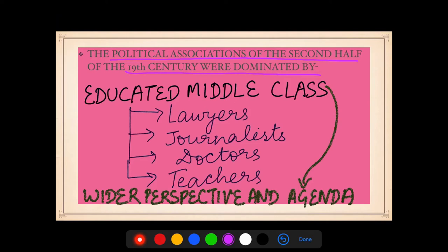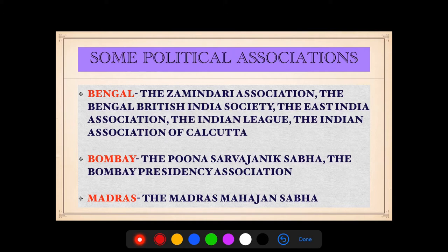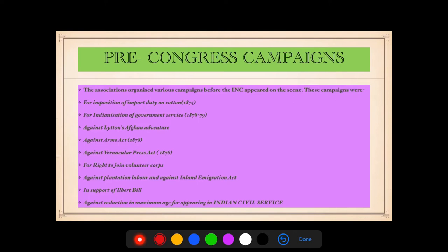The political associations of the second half of the 19th century were dominated by educated middle class — lawyers, journalists, doctors, and teachers — and they had a much wider perspective and agenda. Examples include: in Bengal, the Zamindari Association, the Bengal British Indian Society, the East India Association, the Indian League, and the Indian Association of Kolkata; in Bombay, the Poona Sarvajanik Sabha and the Bombay Presidency Association; and in Madras, the Madras Mahajan Sabha.